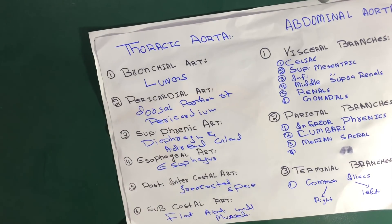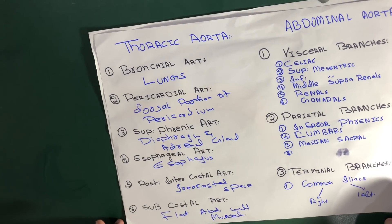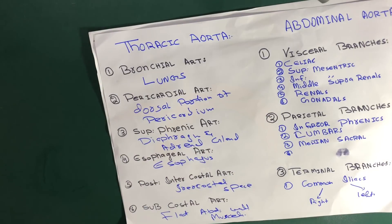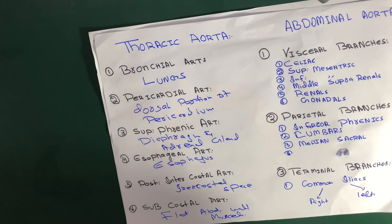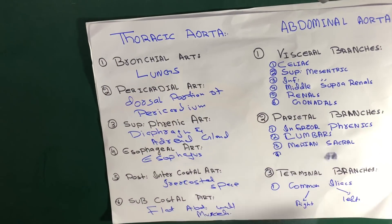So to summarize, the descending thoracic aorta has six branches: bronchial artery — supplies lungs; pericardial artery — supplies the dorsal portion of the pericardium; superior phrenic artery — supplies the diaphragm and adrenal glands; esophageal artery — supplies the esophagus; posterior intercostal artery — supplies the intercostal space; and subcostal artery — supplies the flat abdominal wall muscles.